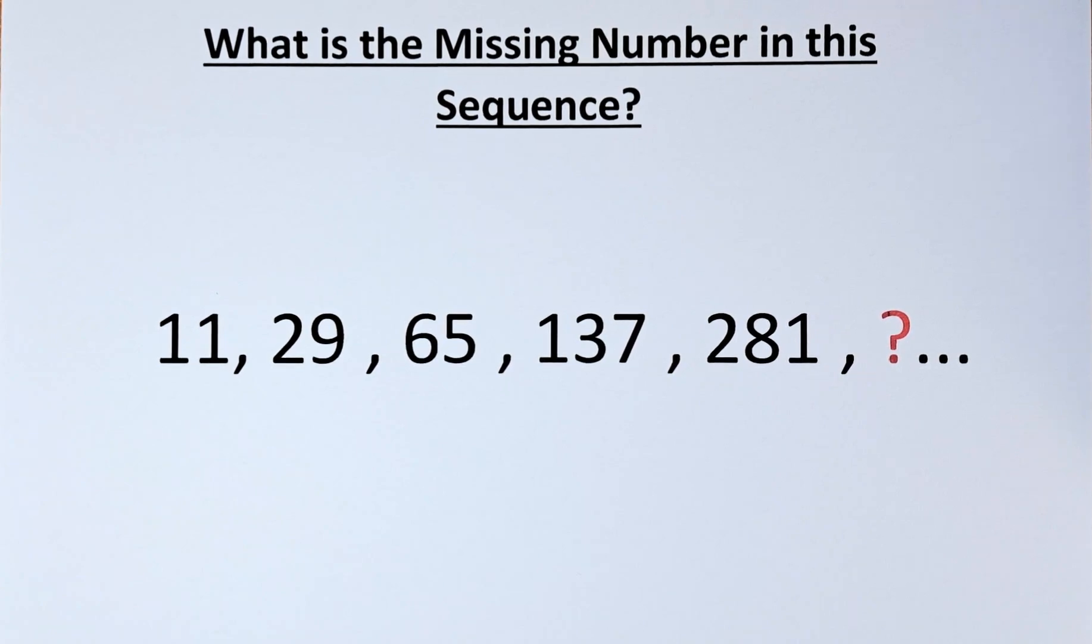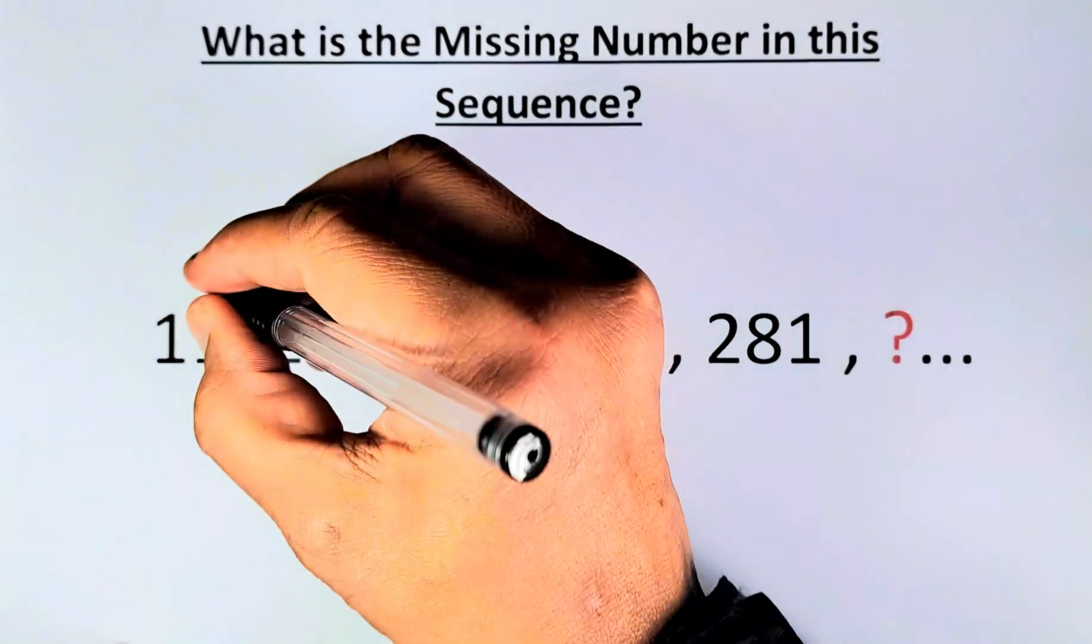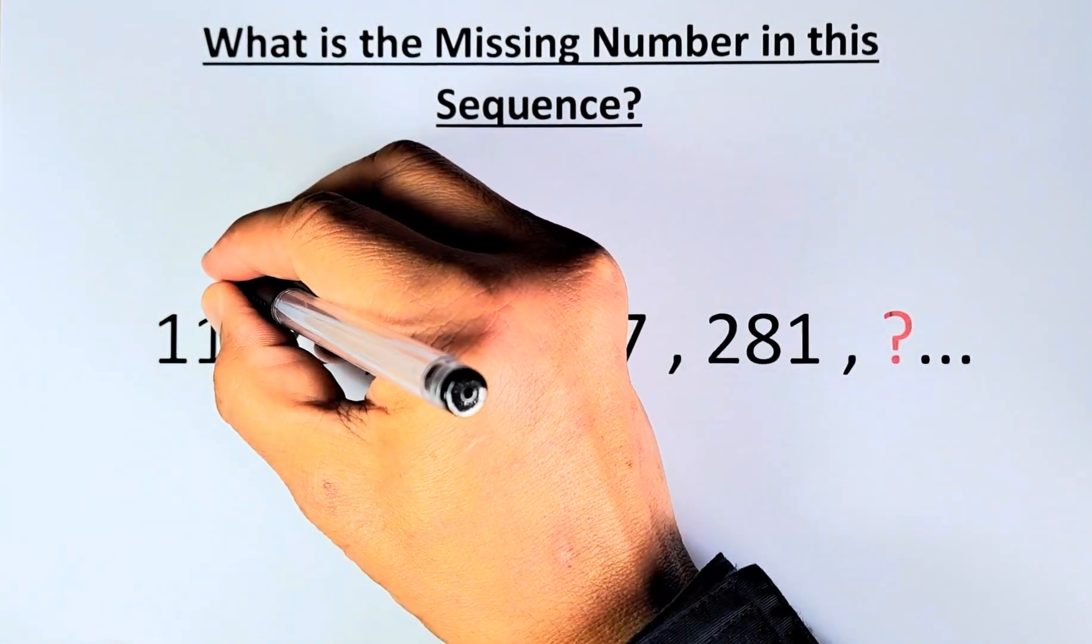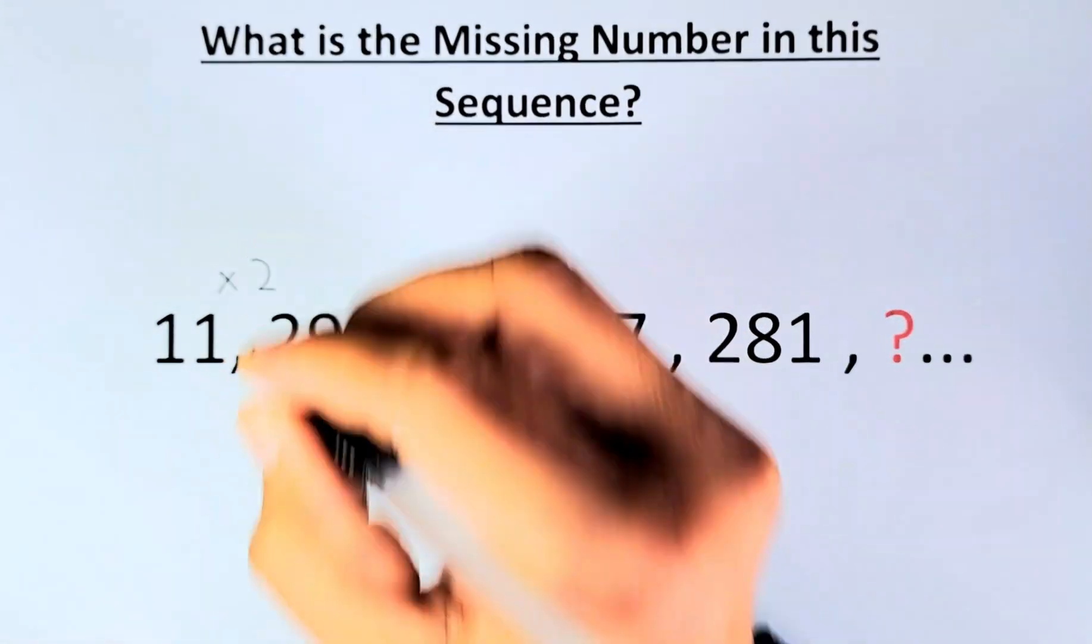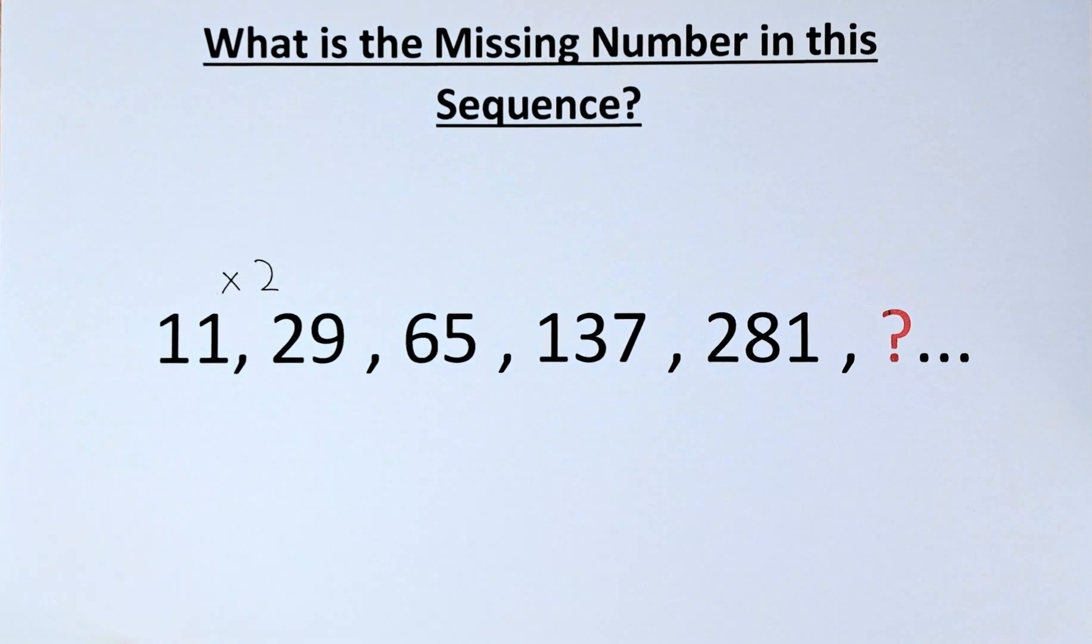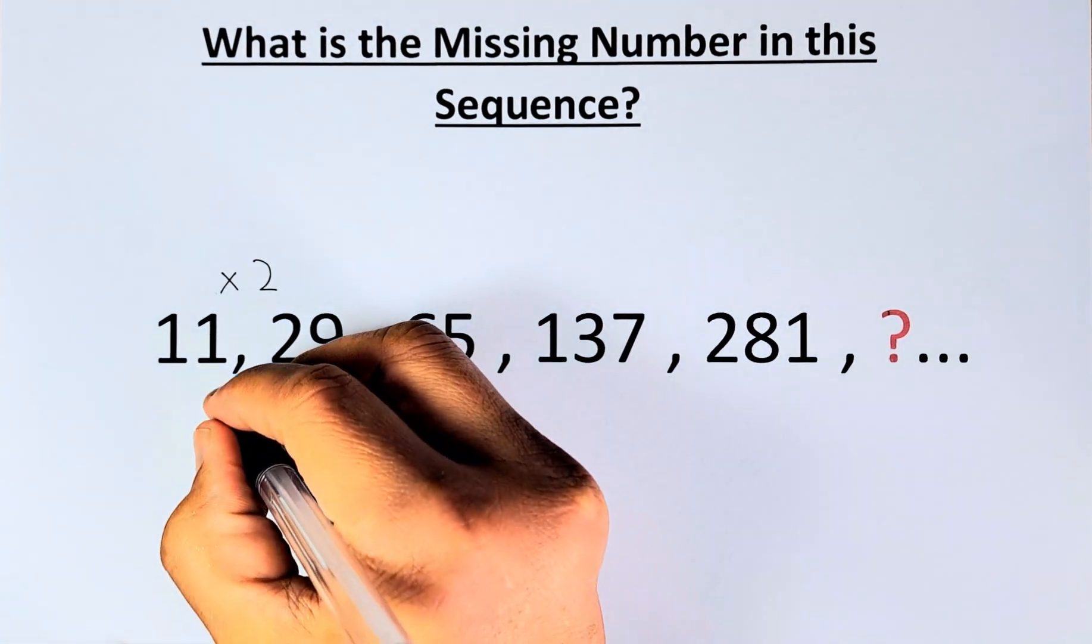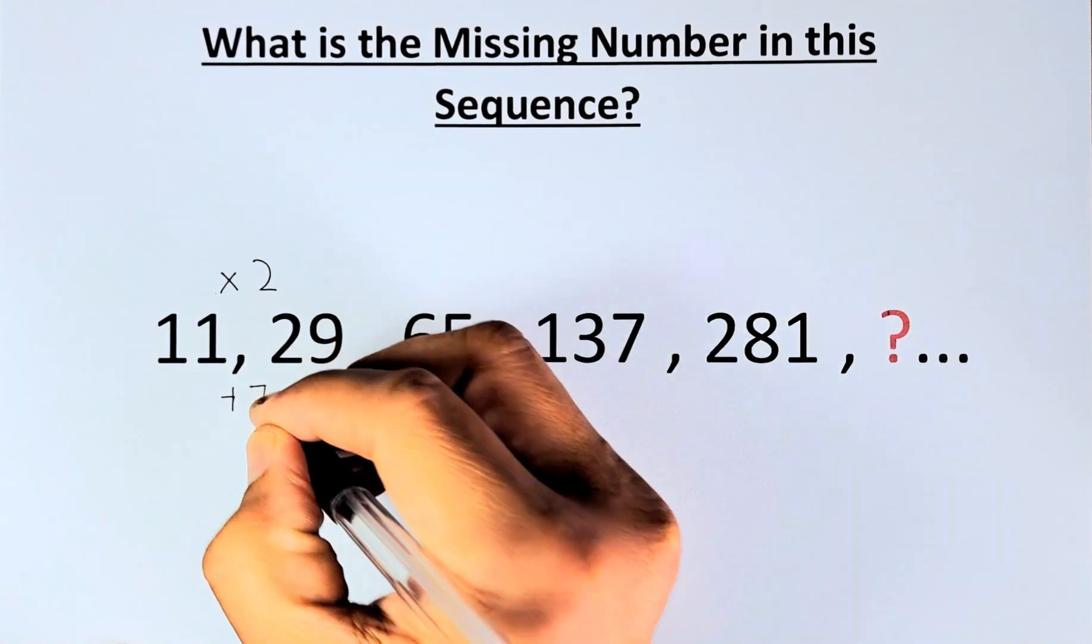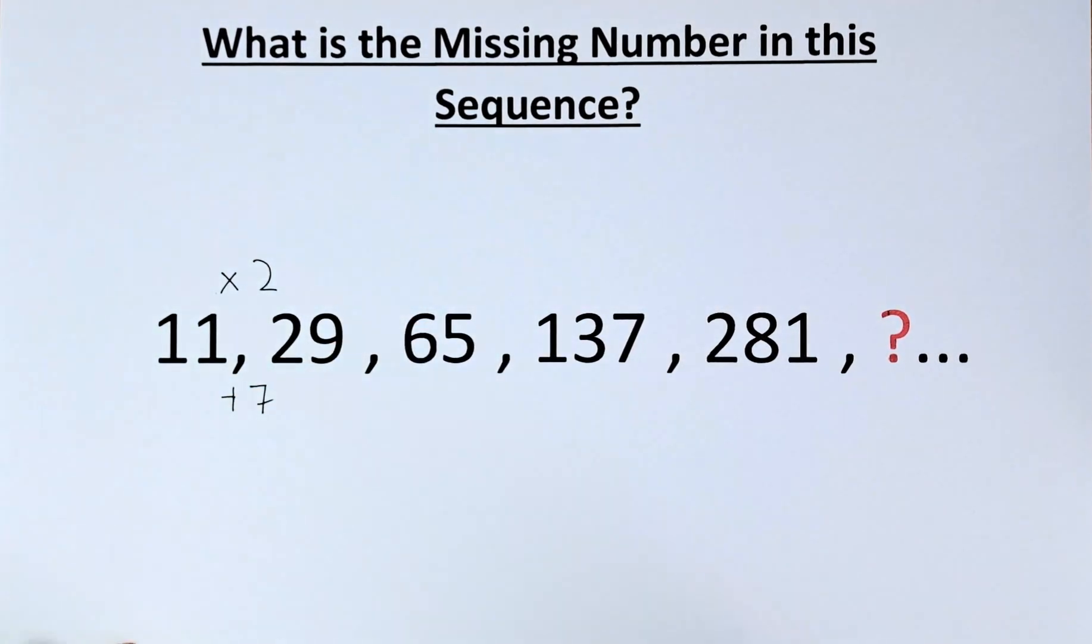11 to 29, what we are going to do - we are going to double the answer. First, we are going to multiply by 2. When 11 multiplied by 2 is 22, you are going to add 7. And then 22 plus 7 will give you 29.